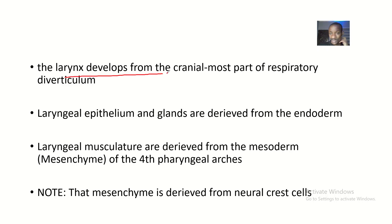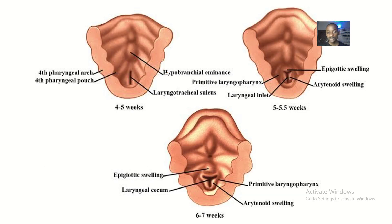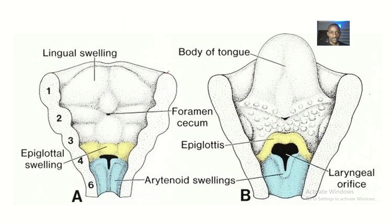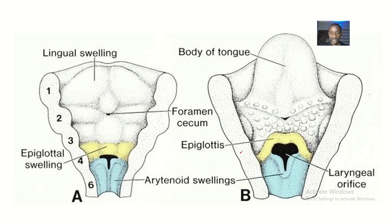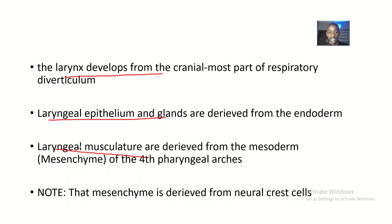The larynx develops from the cranial parts of the respiratory diverticulum. The laryngeal epithelium and glands are derived from the endoderm. The laryngeal musculature is derived from the mesoderm of the fourth pharyngeal arches.